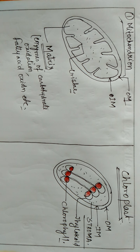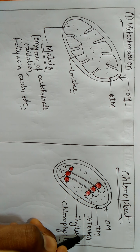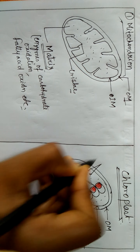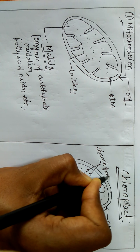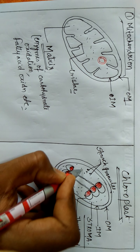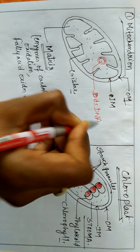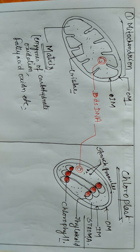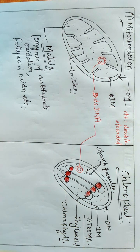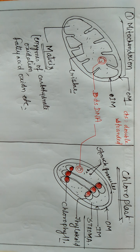This chloroplast is present in the mesophyll cells of the leaves. In the stroma, enzymes for photosynthesis and protein synthesis are present. Some starch granules are also present. One more important structure: double-stranded circular DNA (ds DNA) is present in both mitochondria and chloroplast.